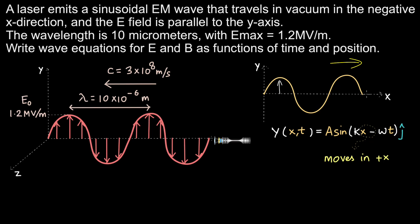If the wave was moving in the positive z direction but still oscillating in the y direction, you would have kz instead of kx. For our wave moving in the negative x direction with the electric field oscillating along the y axis, there must be a plus kx plus omega t in the wave equation, and a j cap to indicate y-axis oscillation.